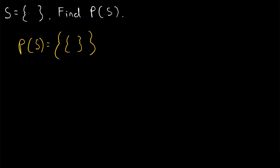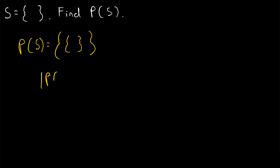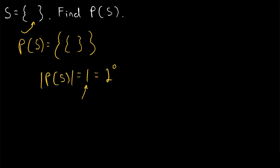This is P of S. Take care to notice that this power set is not the empty set — it's the set containing the empty set. The cardinality of this power set is equal to one, as we would expect. Given any set, the number of subsets it has is equal to two to the power of its cardinality. The cardinality of the empty set is zero, so it has two to the power of zero, or one, subset. And the number of subsets is, of course, the cardinality of the power set.